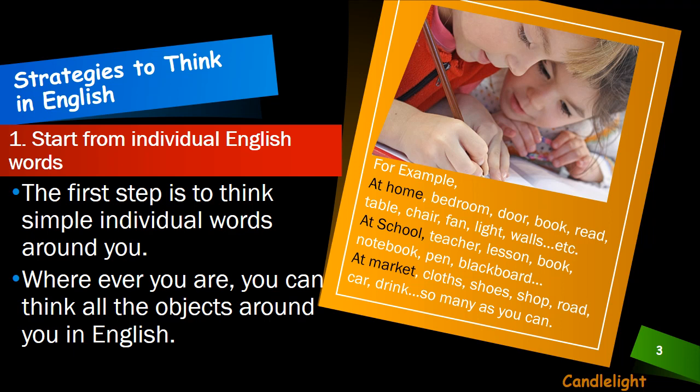آپ کسی market میں ہیں — آپ کپڑے دیکھ رہے ہیں — clothes۔ کوئی جوتے پسند کرتے ہیں — shoes۔ کسی دکان میں ہیں — that is called shop۔ آپ road پر ہیں — that is called road۔ آپ کسی بھی vehicle پر ہیں — car ہے، رکشہ ہے، auto ہے۔ آپ کوئی چیز پی رہے ہیں — drink۔ So many things are around you, and you can recall and remember single words as you can. یہ ہے first strategy جو کہ help کرے گی آپ کو انگلیش بولنے میں اور انگلیش میں سوچنے میں۔